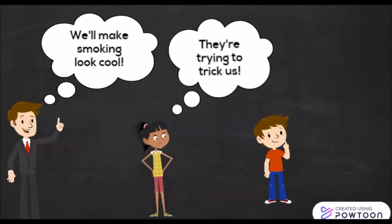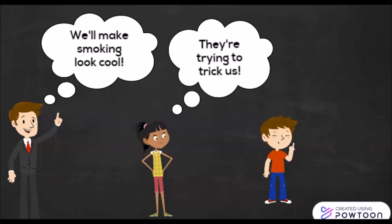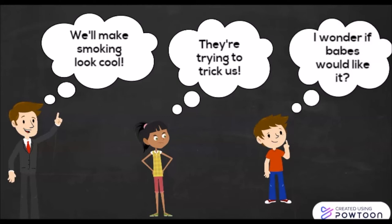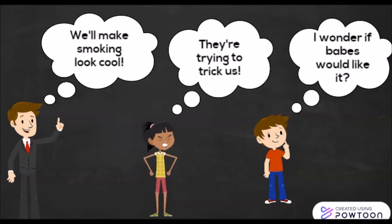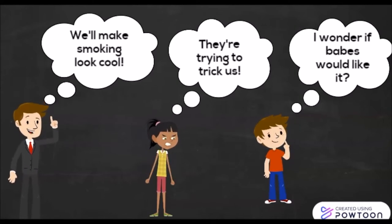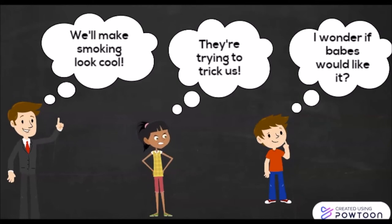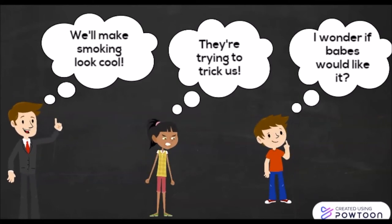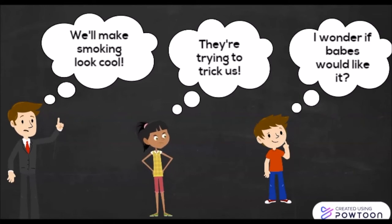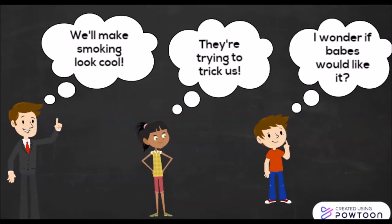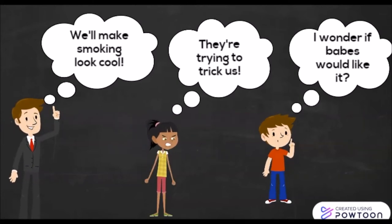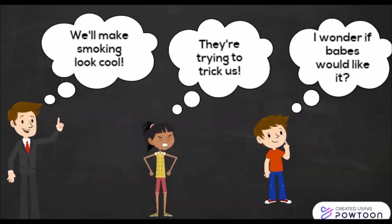The teenagers themselves — some of them were angry and upset, thinking that they were being tricked by the advertising companies, and those were expressed using direct quotations. And then we have some implied or inferred perspectives, like, I wonder if babes would like it. We know that part of the advertising company's goal was to make teenagers think that they would be more popular.